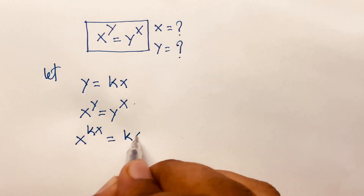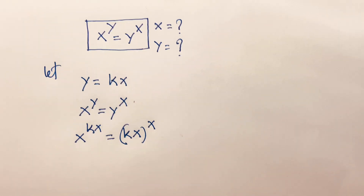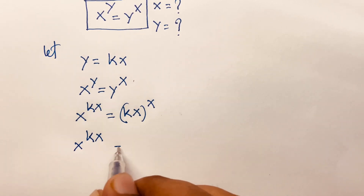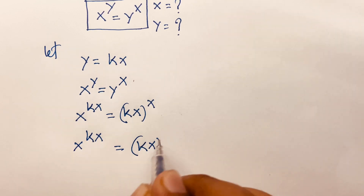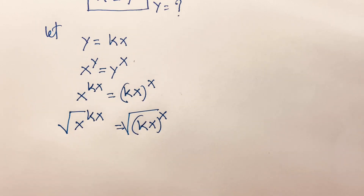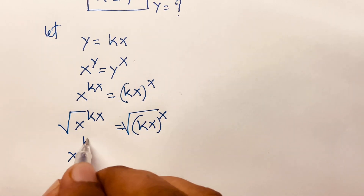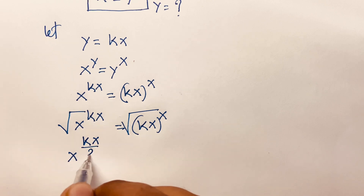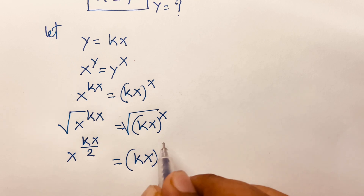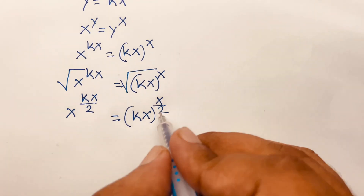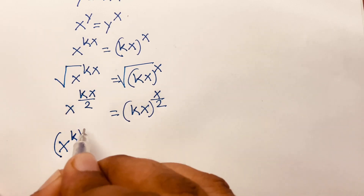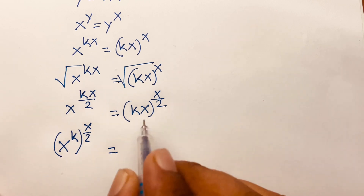So x to the power kx is equal to kx bracket to the power x. I just use both-side square root, then I can say x to the power kx over 2, and kx bracket to the power x over 2. Then I can say x to the power k, bracket to the power x over 2, is equal to kx bracket to the power x over 2.